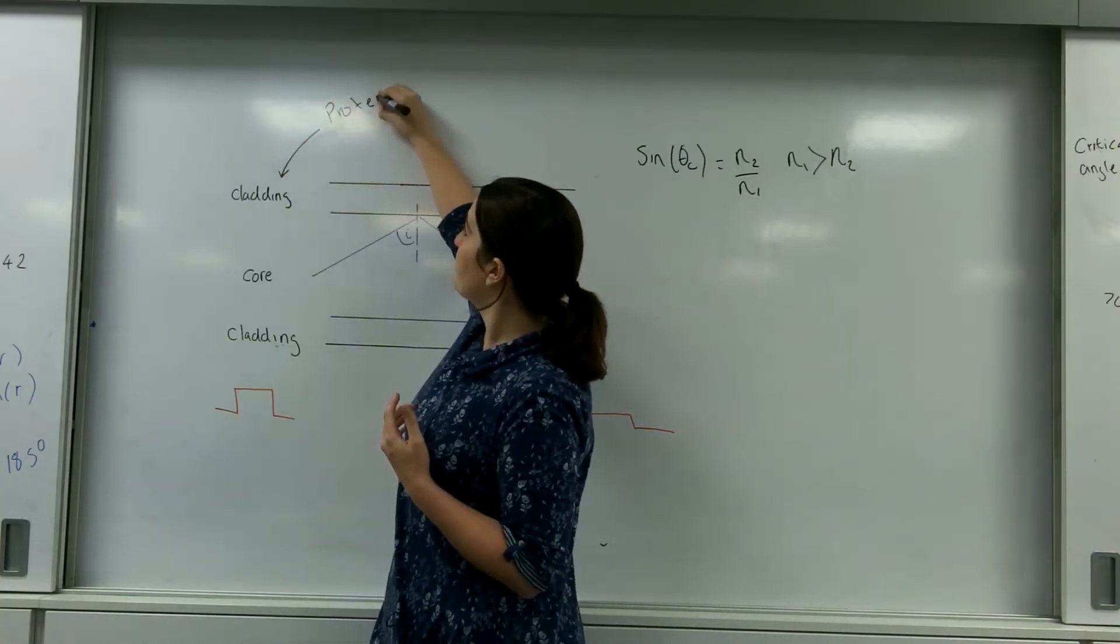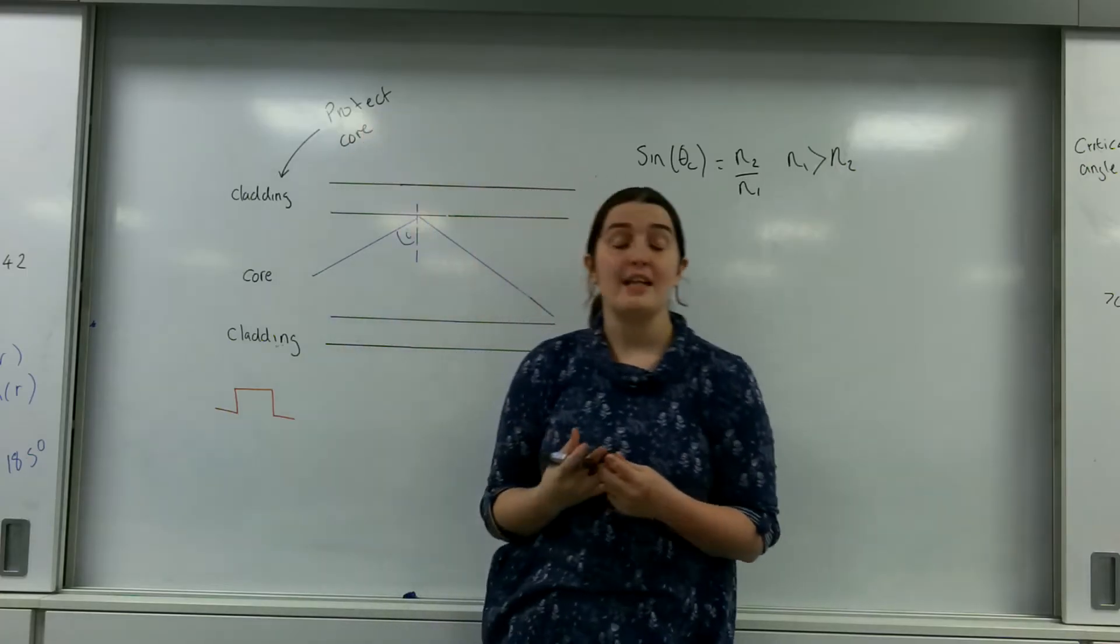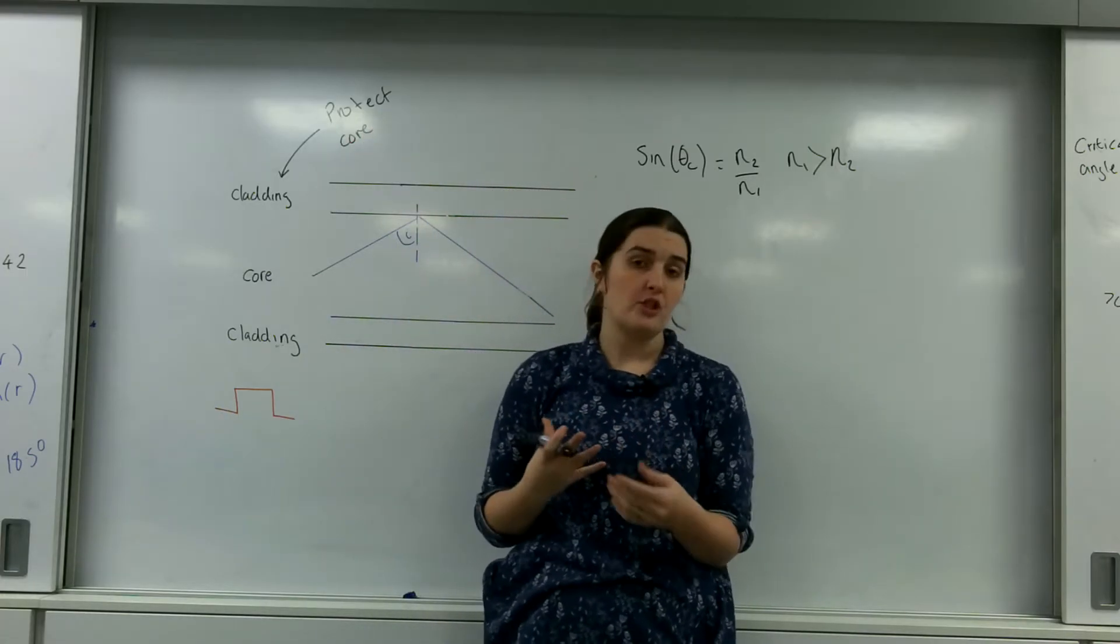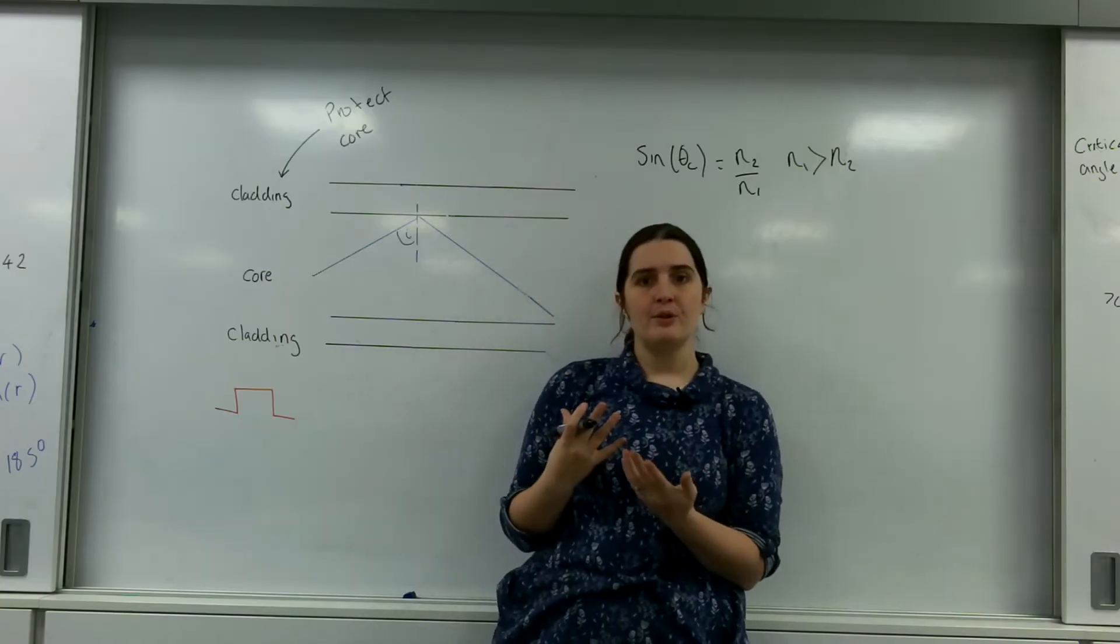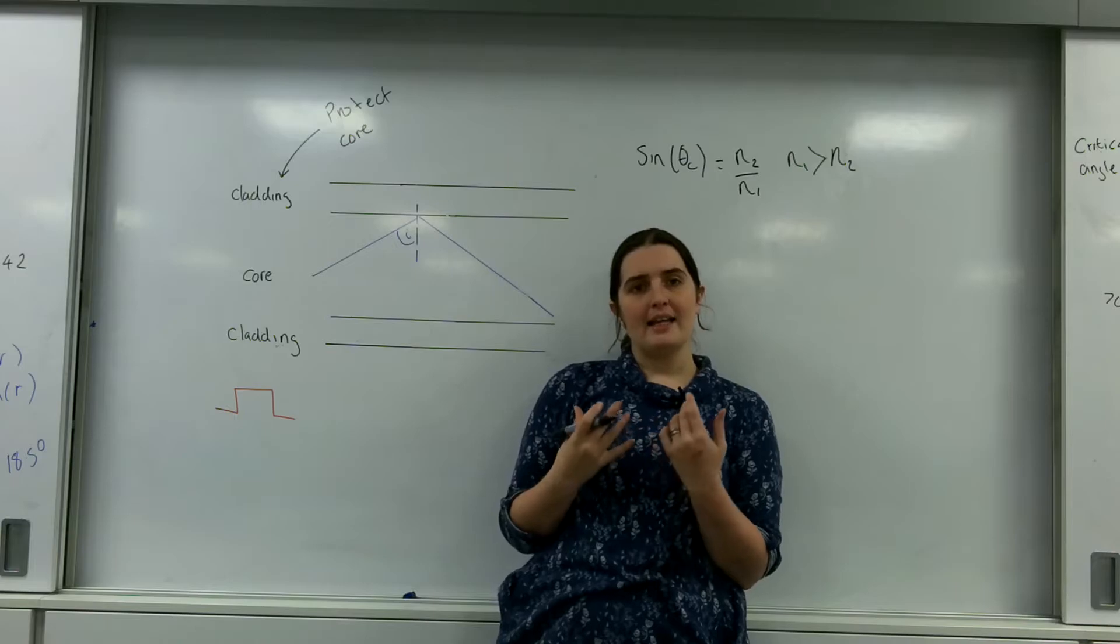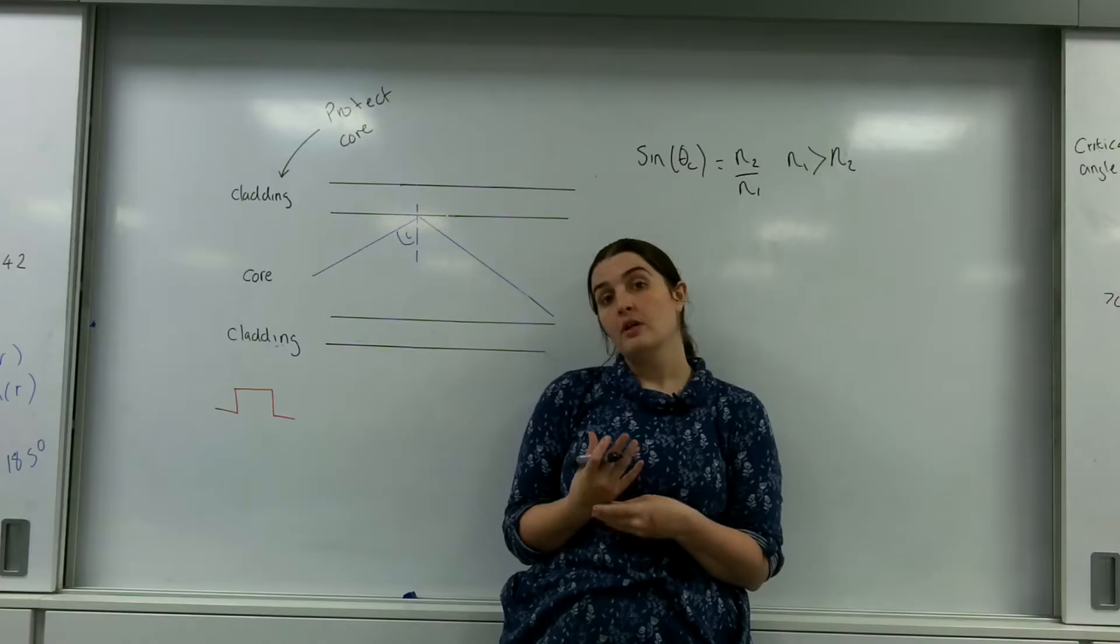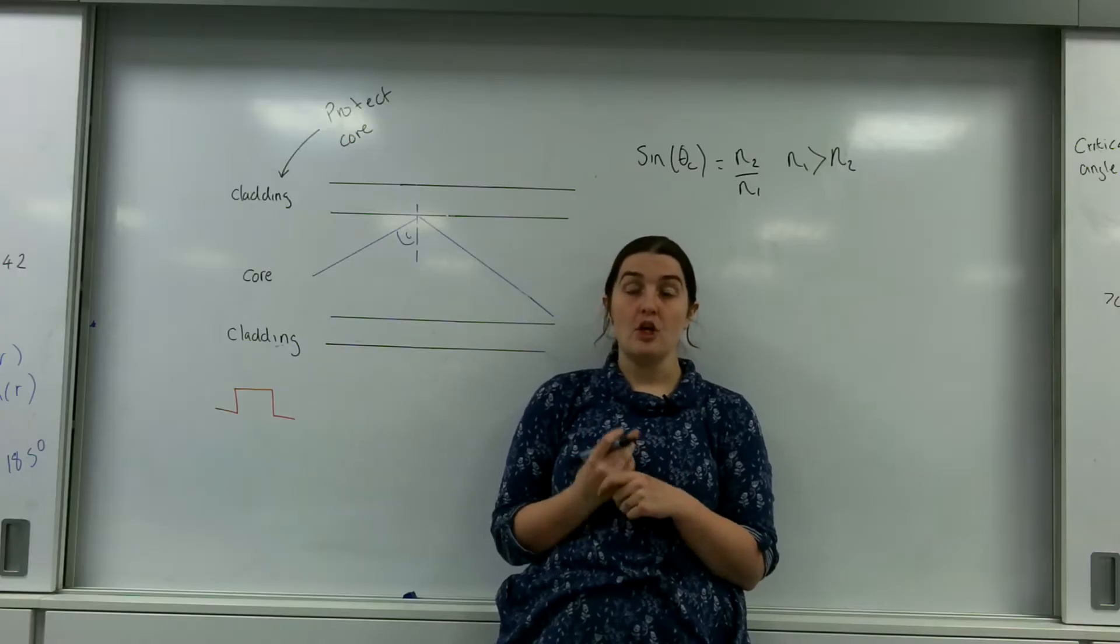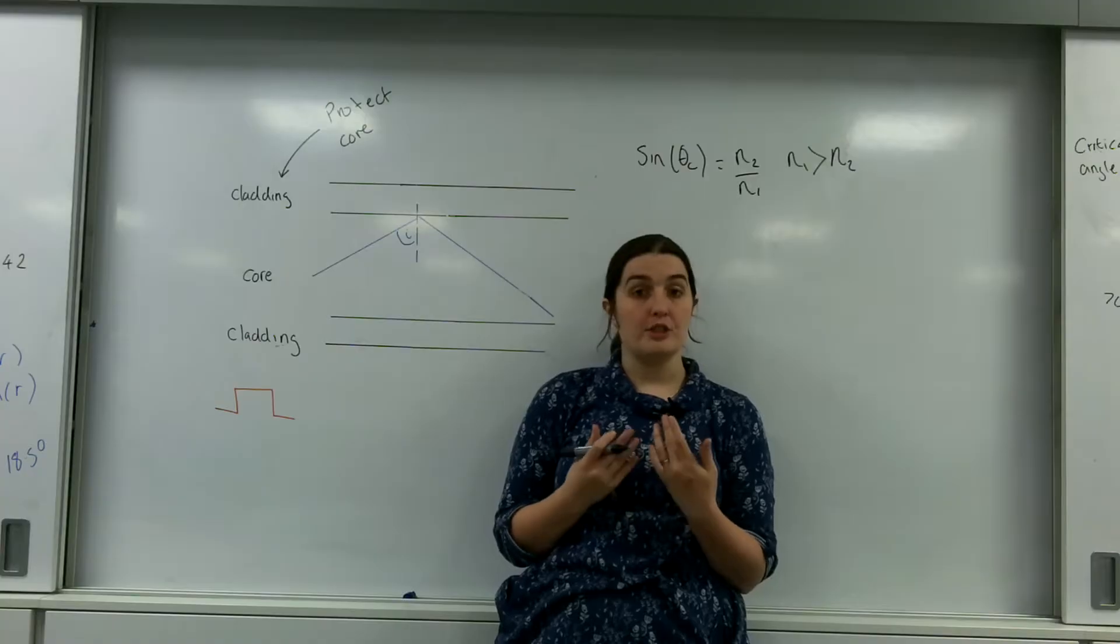So it's to protect the core, but also it's to promote total internal reflection. It gives it another material that can allow for TIR to happen. So it's a material that you can control. You can control its refractive index so you can control its critical angle.